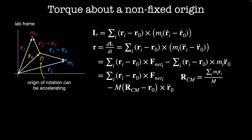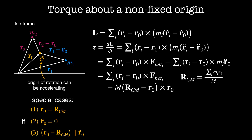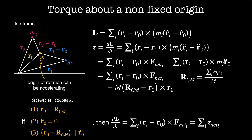We can consider three special cases to simplify this. First, when the origin of rotation is at the center of mass. Second, when the origin of rotation is not accelerating. Third, when (r_0 minus R_CM) is parallel to the acceleration of the origin. In all three cases the fictitious torque term is zero, and the rate of change of angular momentum equals the sum over i of positions cross external forces, which is just the net external torque.